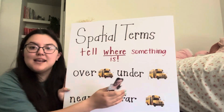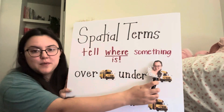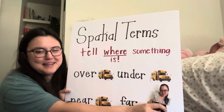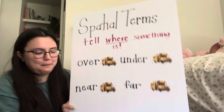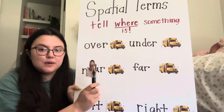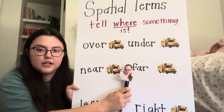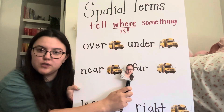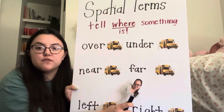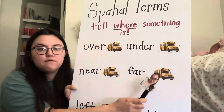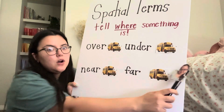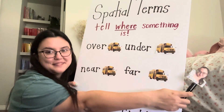Our first word is over — Miss Allie would be over the school bus. Our next word is under — so Miss Allie would be under the school bus. The next word is near — Miss Allie would be near, or close to, the school bus. The next word is far — if you are far from the school bus, you are not right here, you are far all the way over here.